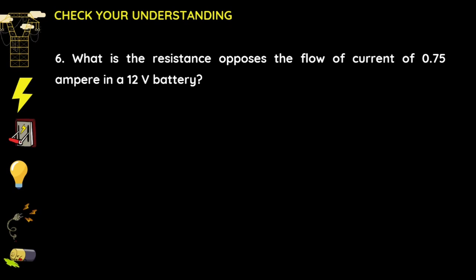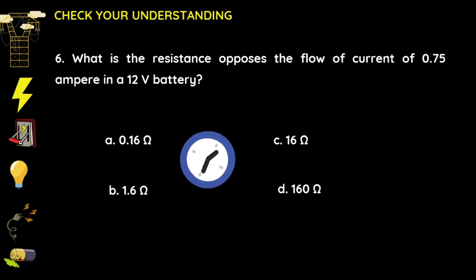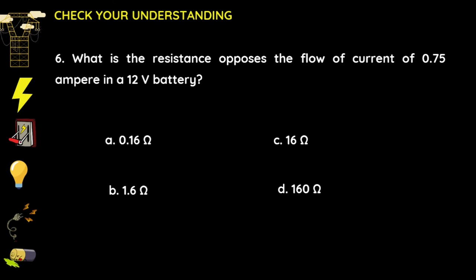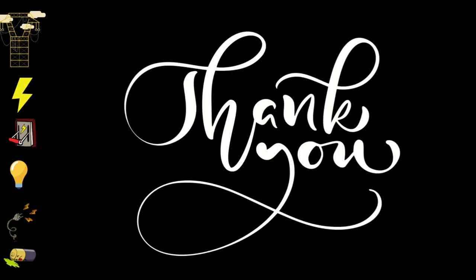For number six: what resistance opposes the flow of current of 0.75 amperes in a 12 volt battery? A) 0.16 ohms, B) 1.6 ohms, C) 16 ohms, D) 160 ohms. Computing for resistance: divide 12 volts by 0.75 amperes = 16 ohms. The answer is C, 16 ohms. That would be all for this episode. Thank you for watching this video lesson.